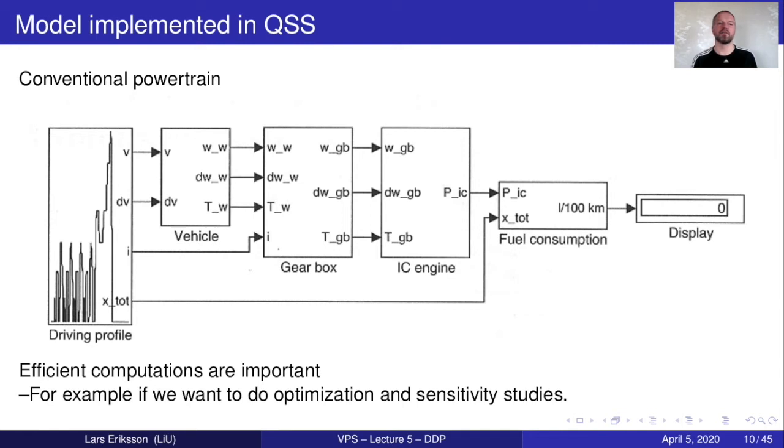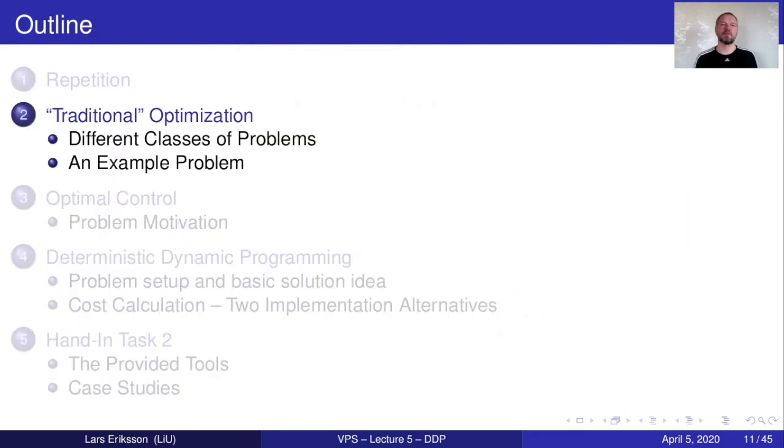You have also encountered QSS in the course which is quasi-static simulation where you're going from the cycle to the vehicle to the gearbox to the engine and finally you extract the fuel consumption. This is a very efficient computational process that can help you investigate different vehicle options very efficiently. So you can check many different designs in a short time period. So that was repetition.